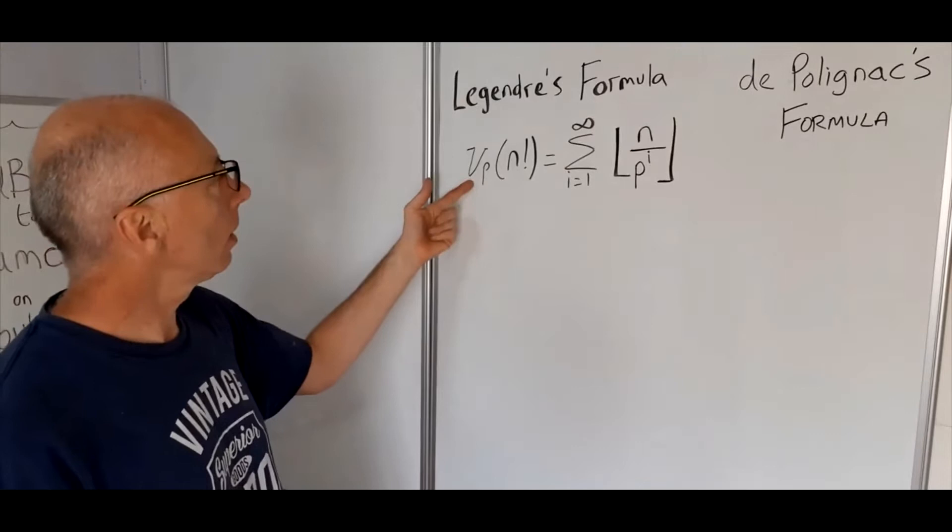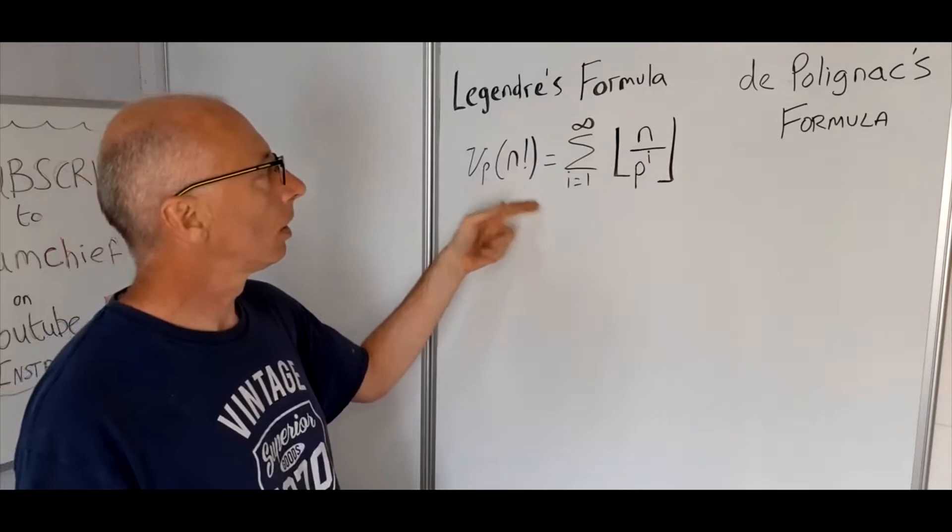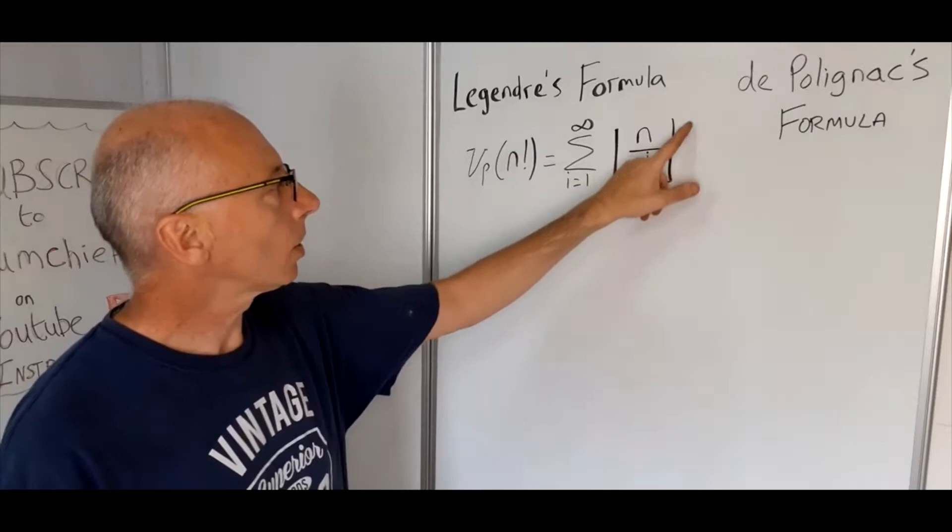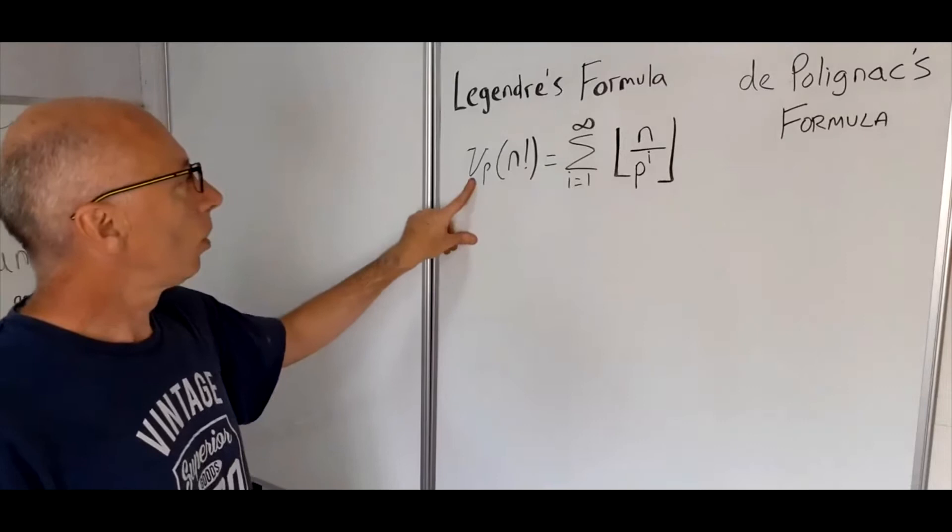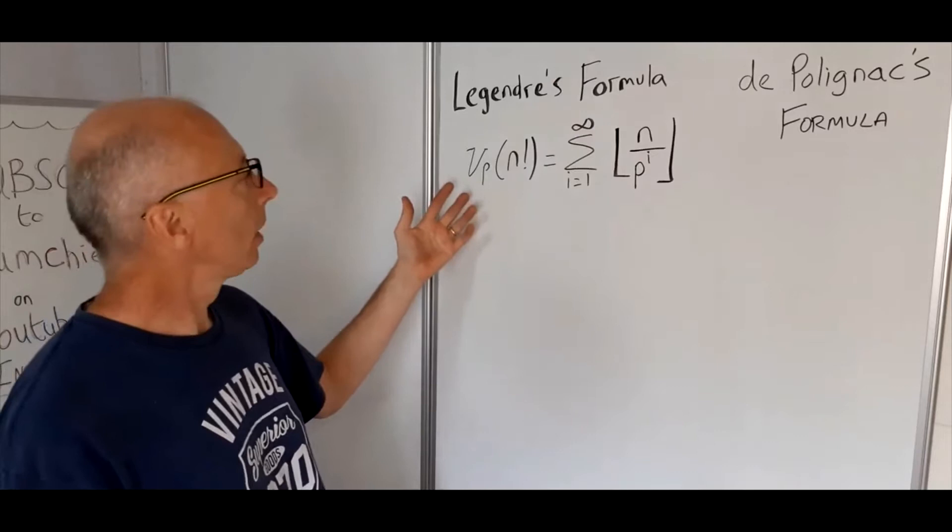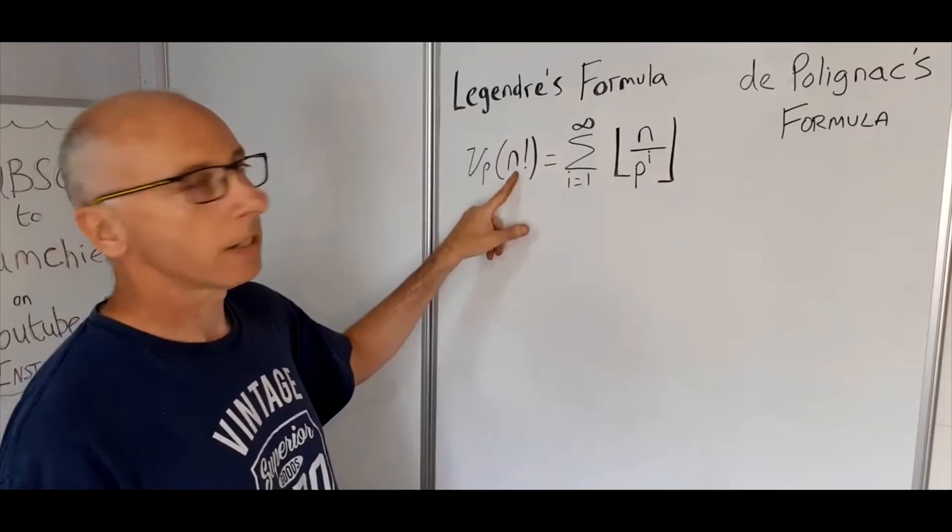Basically what it says is that nu subscript p of n factorial equals the sum from i goes from 1 to infinity of n divided by a prime number p to the power of i, and this notation here is the floor function. So first of all, what is this Greek letter nu? This is basically the p-adic function. It tells us how many times a prime number p appears in the factorization of the number in the brackets, in this case n factorial.